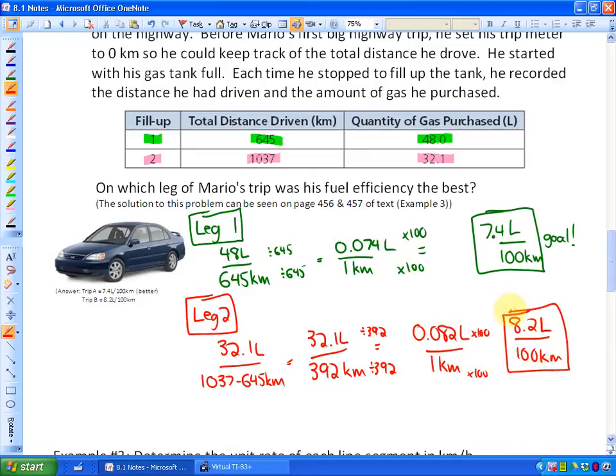So the last thing to do is interpret the answer. It tells us fuel efficiency the best. Would you rather use 7.4 liters of gas for 100 kilometers or 8.2? The better one is always the one that uses less gas for 100 kilometers. So trip number one or leg number one was better.